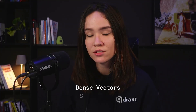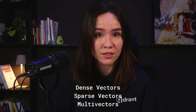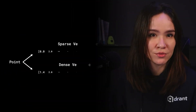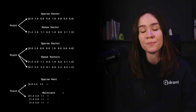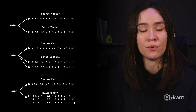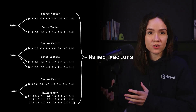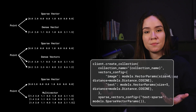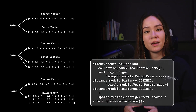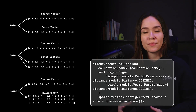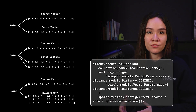So those are the three main types of vectors you can work with in Quadrant: dense vectors, sparse vectors, and multivectors. Quadrant can also store multiple types of vectors per point — so you can have a point with both sparse and dense vectors, or two dense vectors and one sparse, and so on. We can do this by using what we call named vectors. Sparse vectors must be named, and dense vectors don't have to be named necessarily. But if you're planning on working with multiple vectors per point, named vectors is a very useful tool to have.